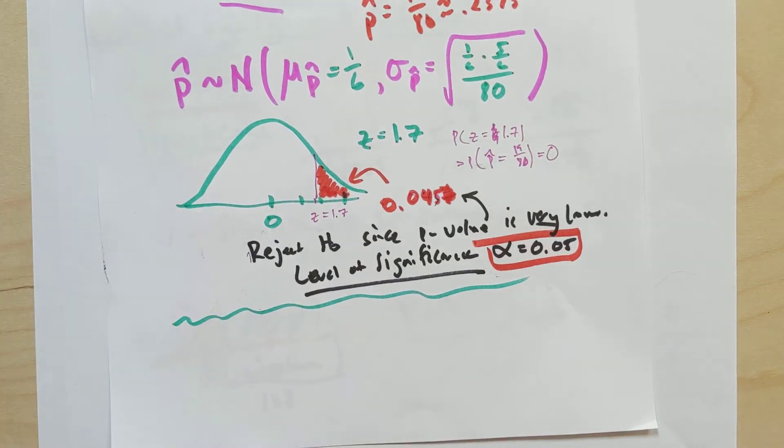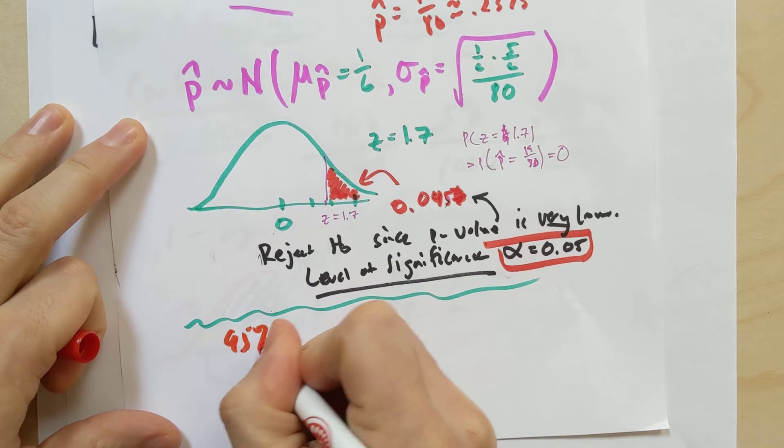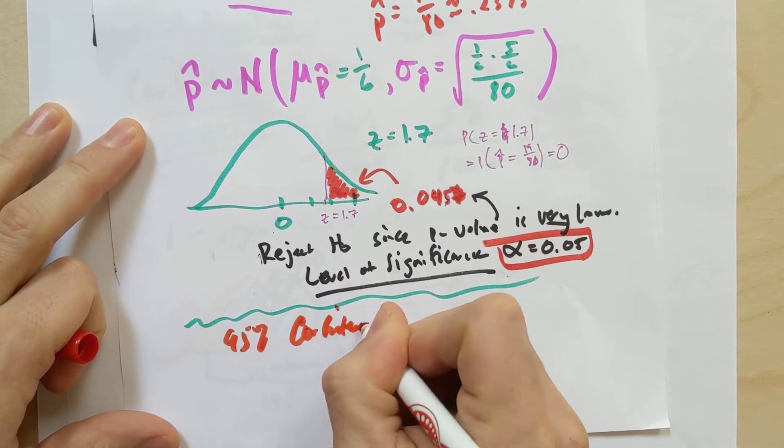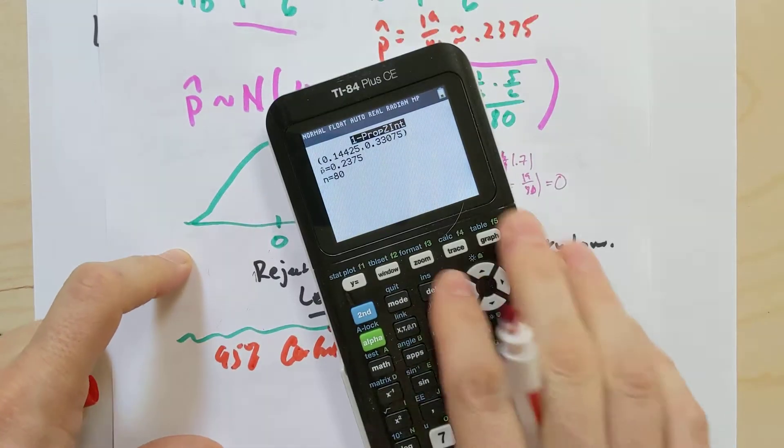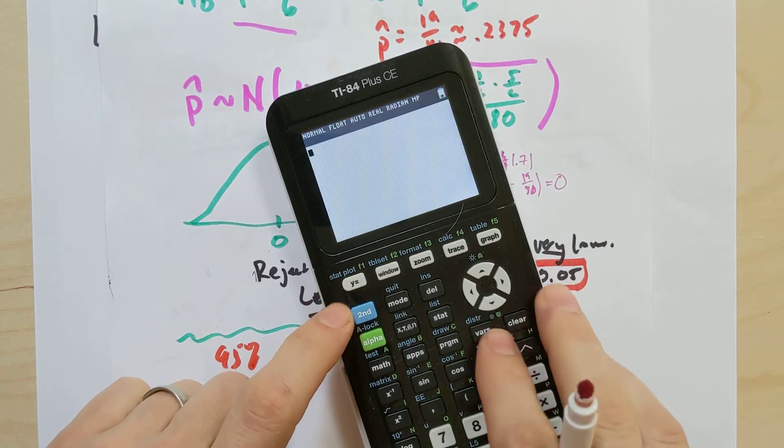And, but in a quiz, when we actually first saw this example, I had asked you, instead of doing any type of level of significance, I asked you to create a confidence interval at 95% confidence, right?